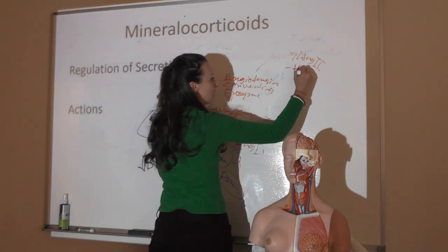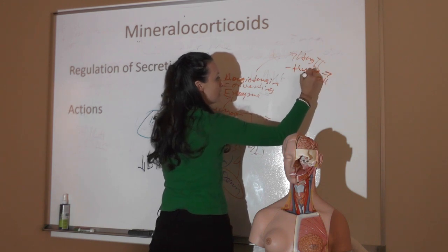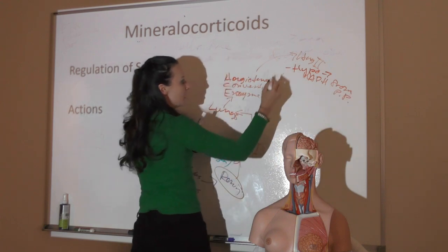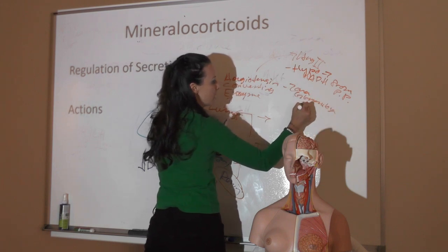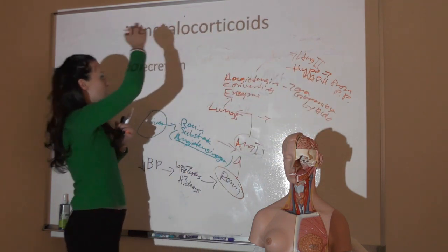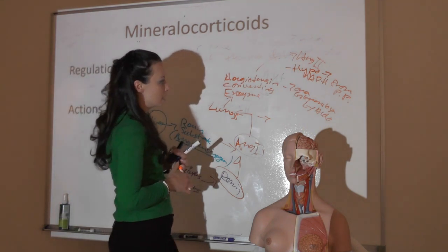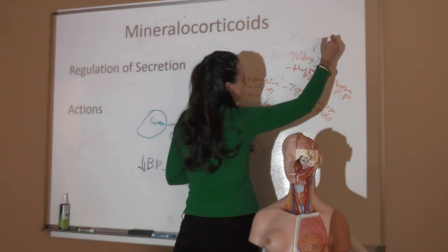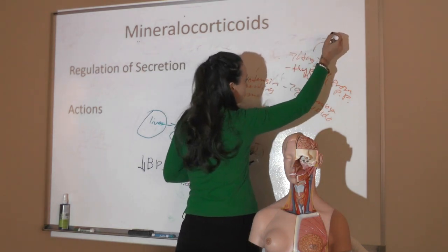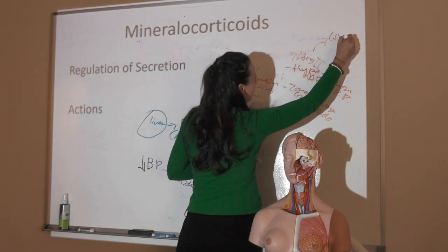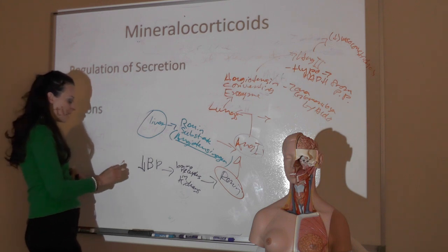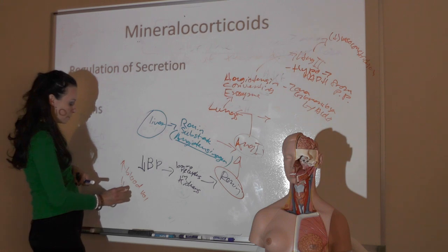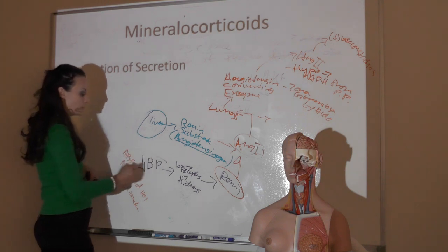Angiotensin II targets the hypothalamus to stimulate ADH release, the zona glomerulosa to stimulate aldosterone release, and causes vasoconstriction. All of these together increase blood volume and reduce blood vessel diameter—more blood flowing through smaller vessels—raising blood pressure and returning the body to homeostasis.